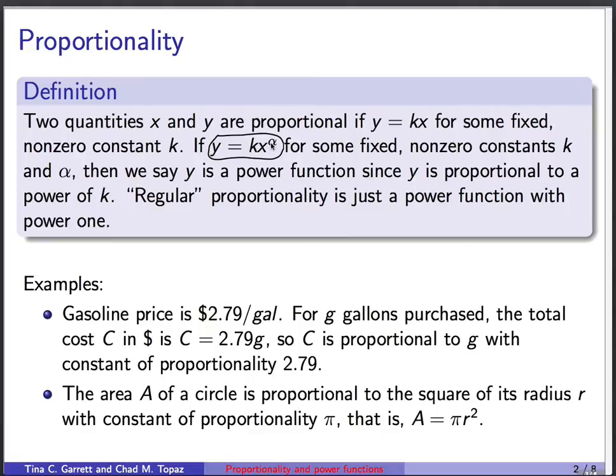So k and alpha here are both constants. k is the constant of proportionality, and alpha is the power, or the exponent. Regular proportionality is just a power function where the power alpha is equal to 1.